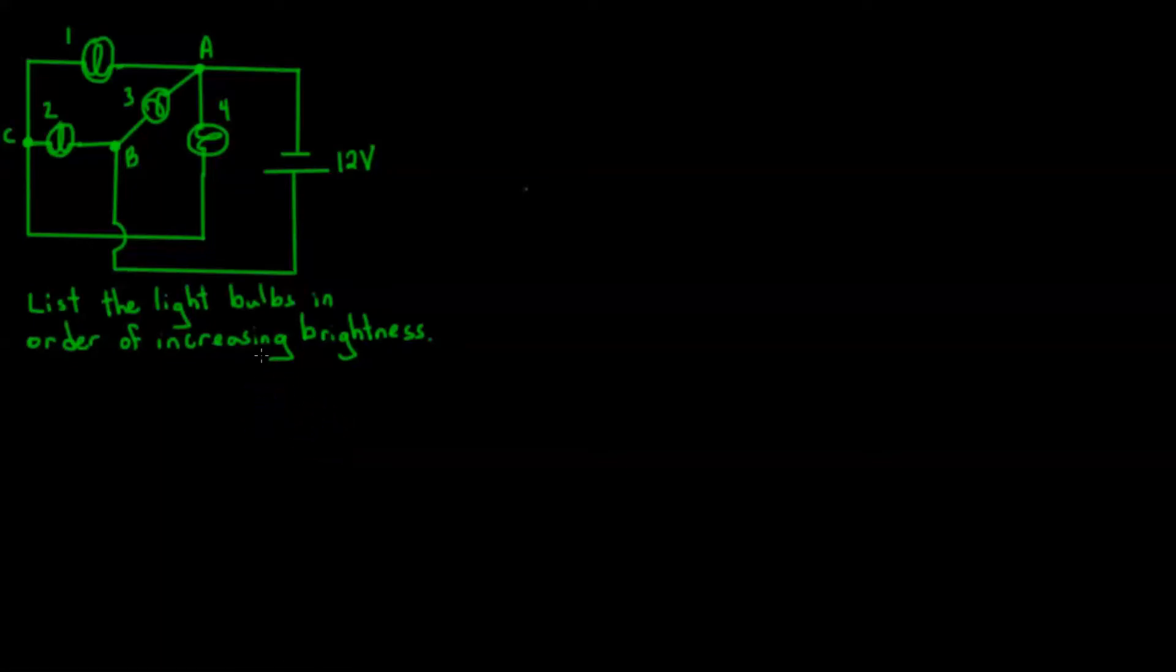So this is a physics problem given on a physics contest for high school physics. We have four light bulbs in this circuit, all of them are identical, so they all have the same resistance. The question is: list the light bulbs in order of increasing brightness.